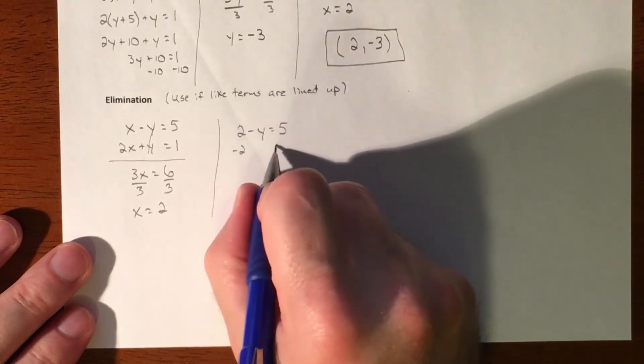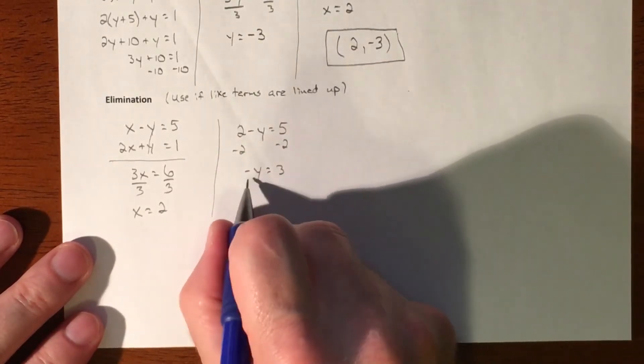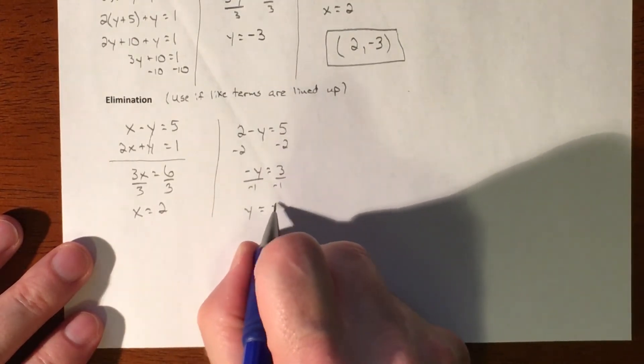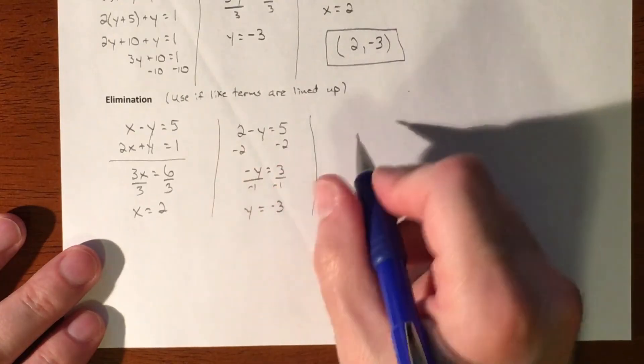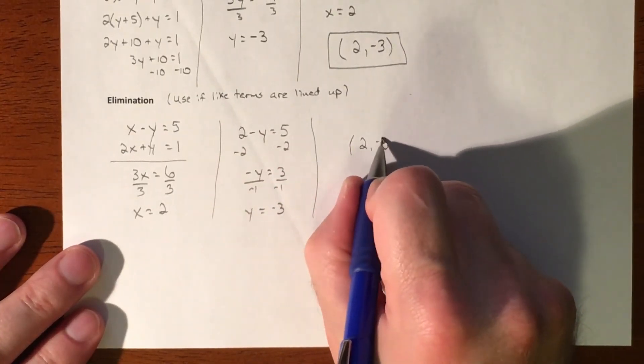And then we subtract 2. Negative y equals 3. Divide by negative 1. Y equals negative 3. So our solution would be 2, negative 3.